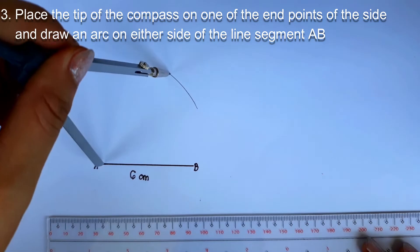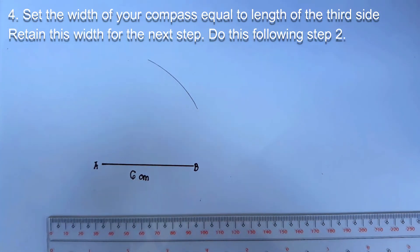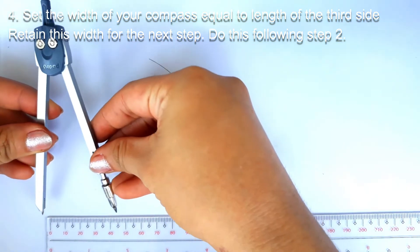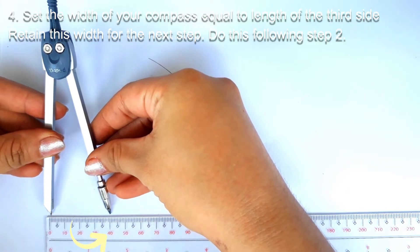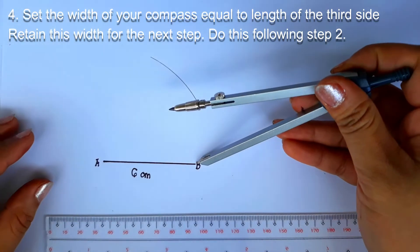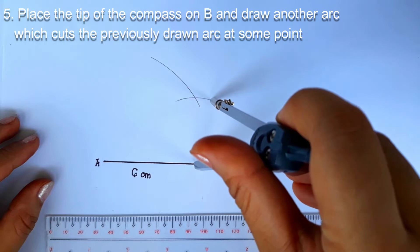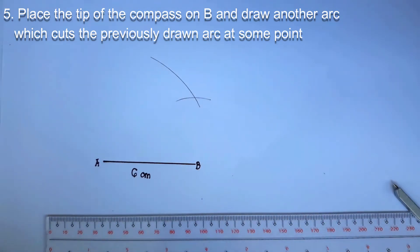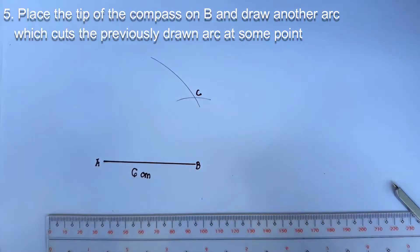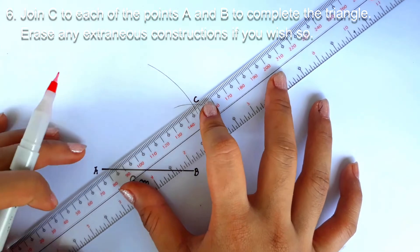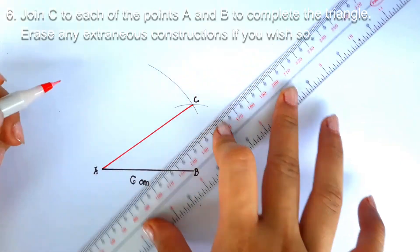And draw an arc on either side of the line segment AB. Number 4. Set the width of your compass equal to the length of the third side, which is 4 centimeters in this case. Retain this width for the next step. Do this following step 2. Number 5. Place the tip of the compass on B and draw another arc which cuts the previously drawn arc at some point. Say it is C. And lastly, join C to each of the points A and B to complete the triangle.